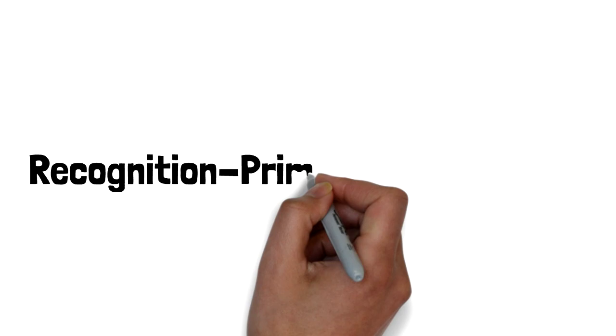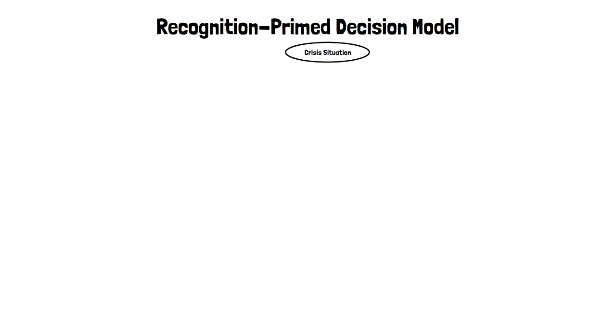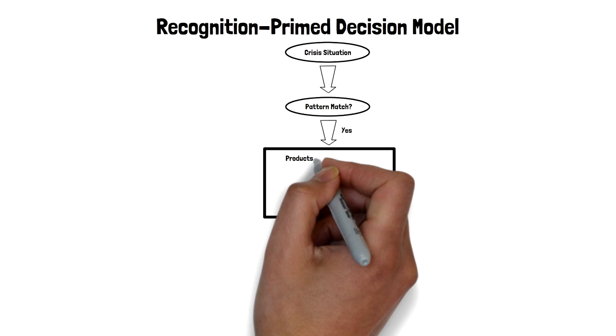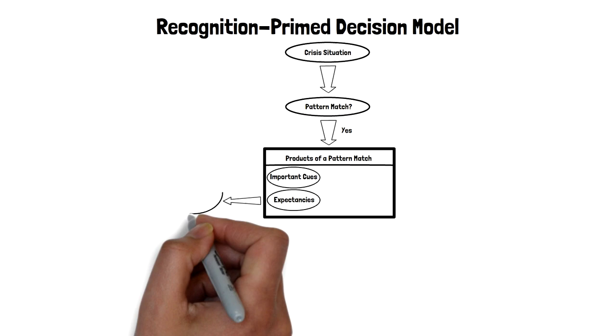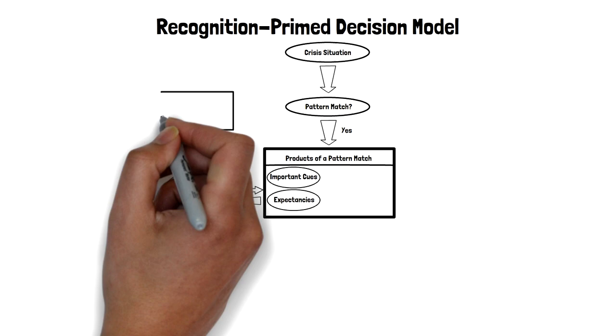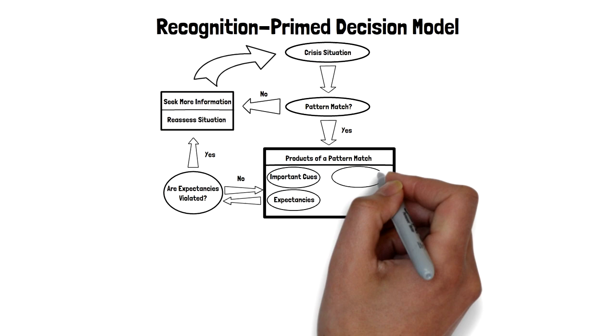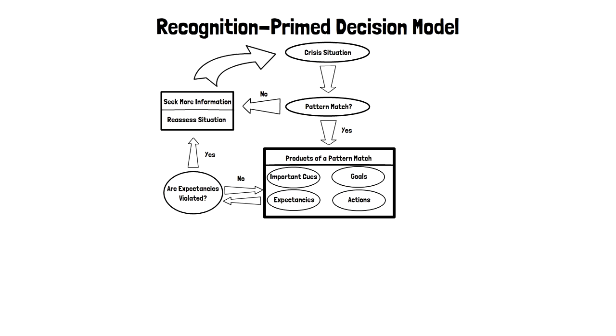And we call that a recognition-primed decision model. It has two parts. The first part is the pattern matching part. You've got a situation, and you don't know what to do, and you've got all these patterns. And within a few seconds, you have a pattern match. And that tells you the kinds of cues that are important, so you know what to pay attention to. It tells you what to expect, so your actions can be smooth. And if your expectancies are violated, that tells you, maybe I've misidentified the situation. It tells you what kinds of goals you can pursue. And it also suggests a set of actions that are likely to be successful. So that's the pattern matching part, and it happens right away.